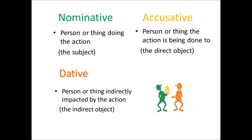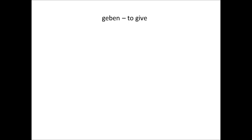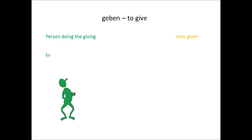That possibly sounds more convoluted than it needs to, so I'm going to move straight on to the example I learnt the dative with: the verb geben, to give. This verb is nice because it acts the same way in both English and German. It needs three nouns or pronouns with it. First of all you need a nominative — the person doing the giving. I'm going to pick he, or er as it is in German. Next I need an item to be given. This is our direct object or accusative — it's the answer to the what question. What does he give? And in my example the answer is the book, das Buch.